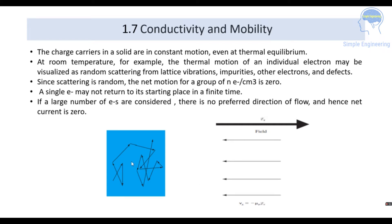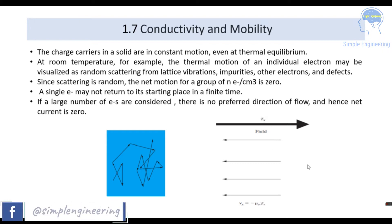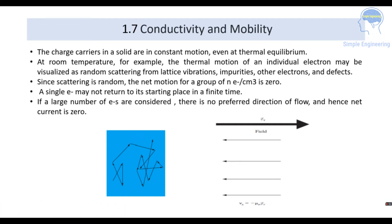The scattering of electrons is shown in this figure. We can see that the electric field is in one direction and the electrons will be flowing in the opposite direction. The net current will be 0 because a single electron will not return to its starting place, and if we consider a large number of electrons, there is no preferred direction of flow.